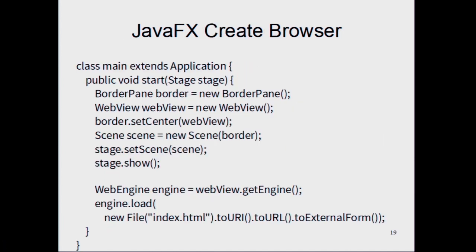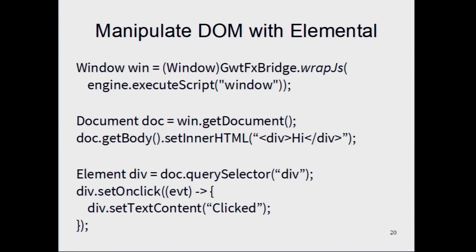Here's the code for opening a browser window in JavaFX. You create a web view, stick it in a window, and load some web page into it. Once it's loaded, you use the Elemental APIs to manipulate things from Java — you grab the window object, get your HTML document, create a div inside it, reach in and grab that div, and set a click handler so that when you click on it, it says 'clicked'. This is all Java code; when you run it, it runs as Java code but all these method calls get bridged into JavaScript.